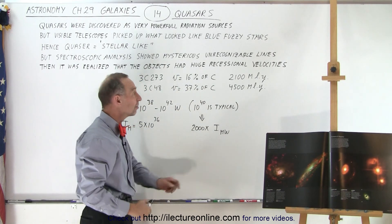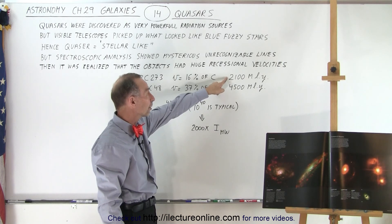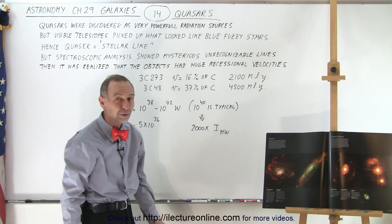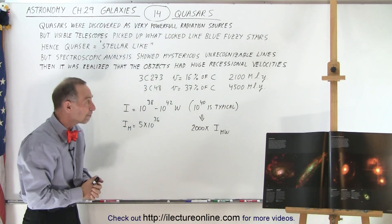This meant that the distance to this one was 2100 million light years, 2.1 billion light years, and this one was 4.5 billion light years away.